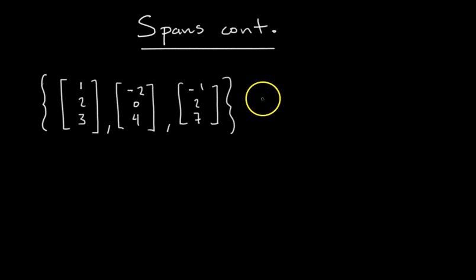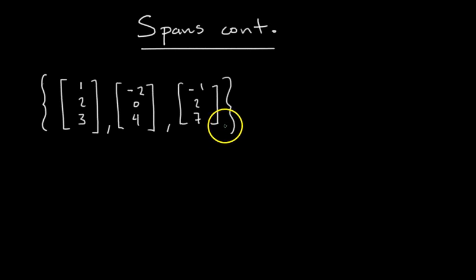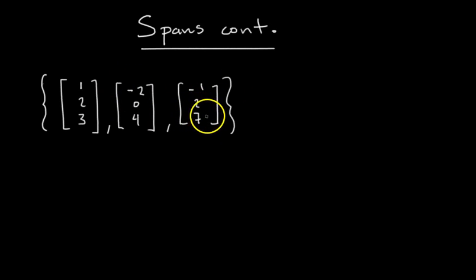All you do is take the set of vectors, put them into a matrix, and row reduce it. However many pivots you get in that matrix — that's the dimension of the span. So if you put three vectors in a matrix and row reduce and get two pivots, the span is two-dimensional, meaning a plane. Three pivots means you span all of R³, and one pivot means the span is a line.